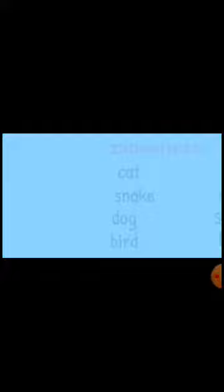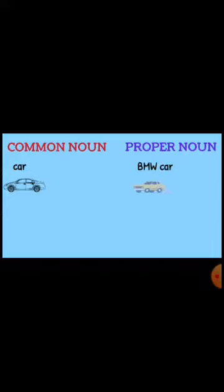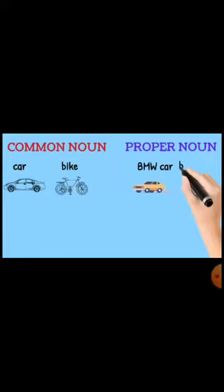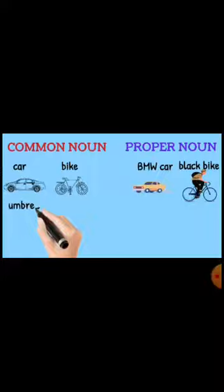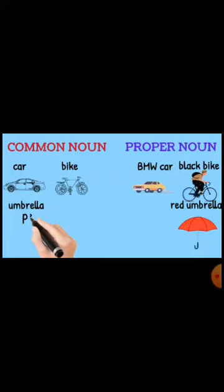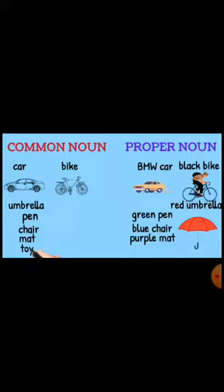Common Nouns and Proper Nouns in things: 'Car' is common — there are so many cars; 'BMW Car' is proper. 'Bike' is common; 'Black Bike' is proper. 'Umbrella' is common; 'Red Umbrella' is proper. 'Pen' is common; 'Green Pen' is proper. 'Chair' is common; 'Blue Chair' is proper. 'Mat' is common; 'Purple Mat' is proper. 'Toy' is common; 'Toy Car' is proper. Thank you for watching.